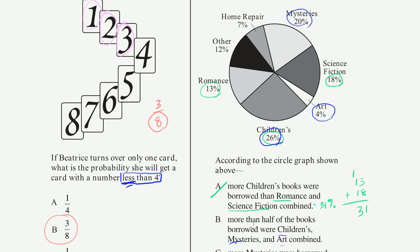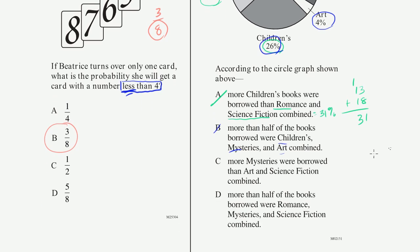So exactly half the books borrowed were children's, mysteries, and art. But they're saying more than half. This is exactly half. So this doesn't seem right either. If they said half or more, then we would have picked this choice. But they said definitely more than 50%. So that can't be it. Although it's kind of a tricky one, because it's exactly 50%.